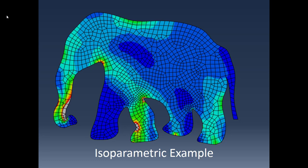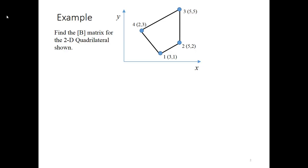This video gives an isoparametric element example working through finding the Jacobian and then determining the B matrix. Here's the element we're going to find a B matrix for. This element is in the XY or global system and it has a non-standard shape, not a typical shape for elements in finite element codes. We have the nodal positions for the nodes in this element, and we're going to use those to define the transformation back to the natural coordinate system, then use that transformation to determine the Jacobian matrix and from that the B matrix.